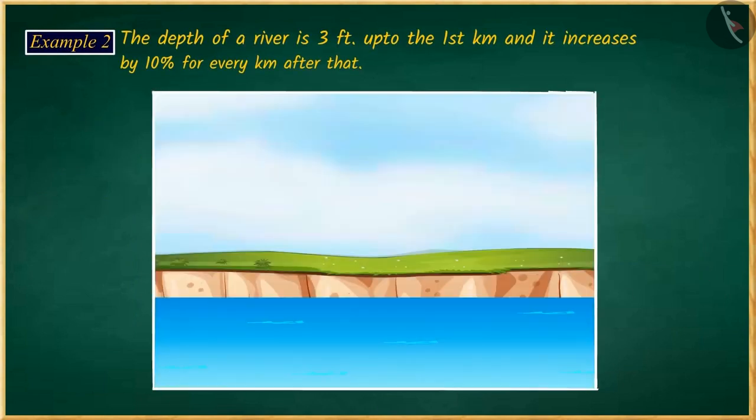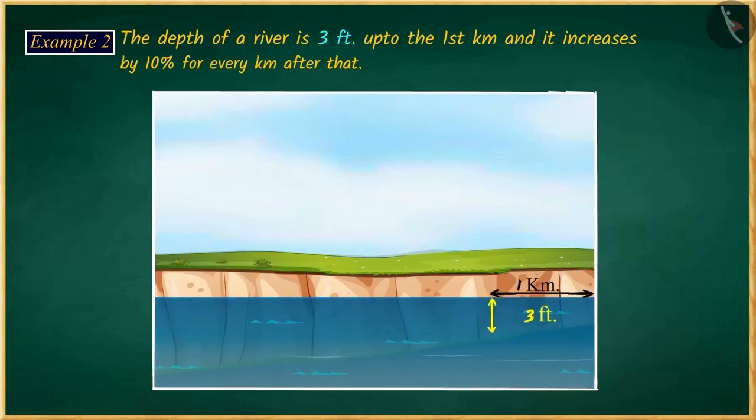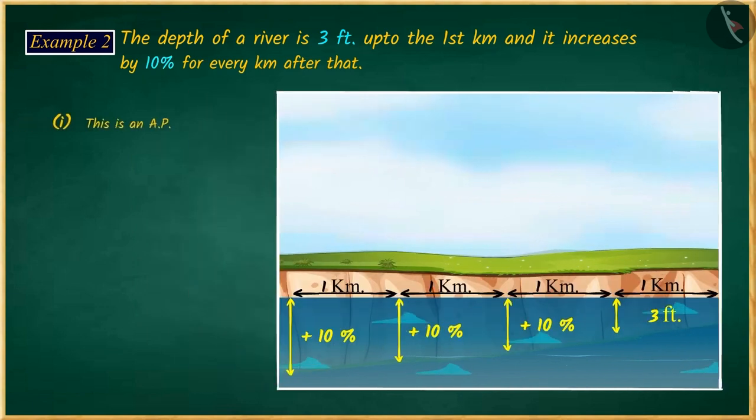Let's see one more example. The depth of a river is 3 feet up to the first kilometer and then with every kilometer, its depth increases by 10%. Will the obtained series be an arithmetic progression or not? Pause the video to solve the question and then match your answer.